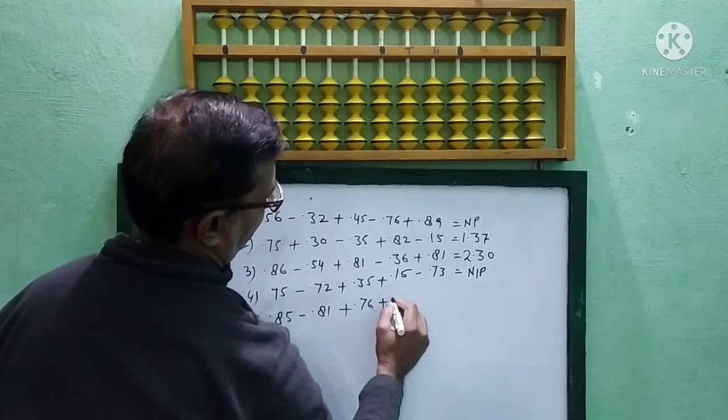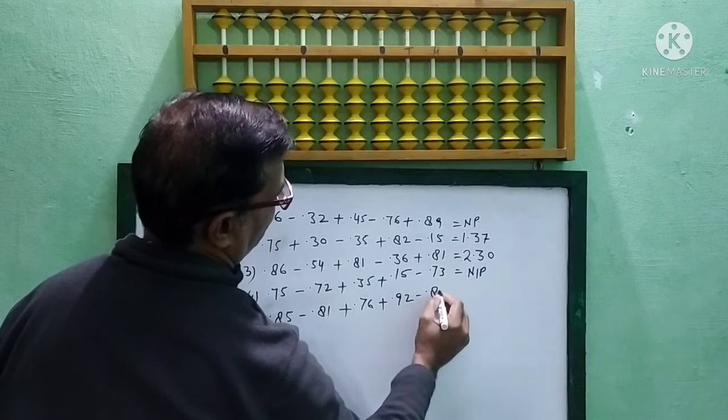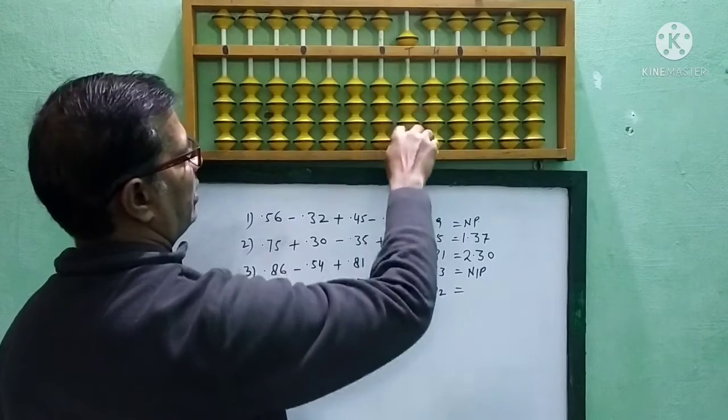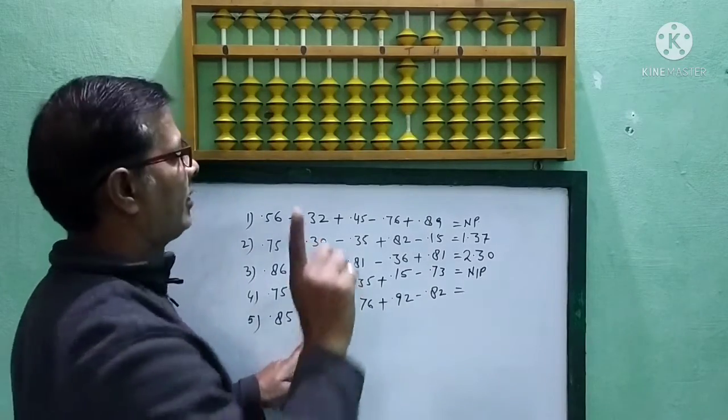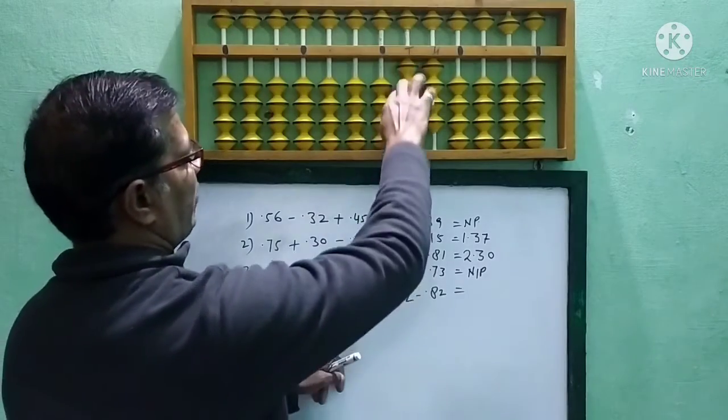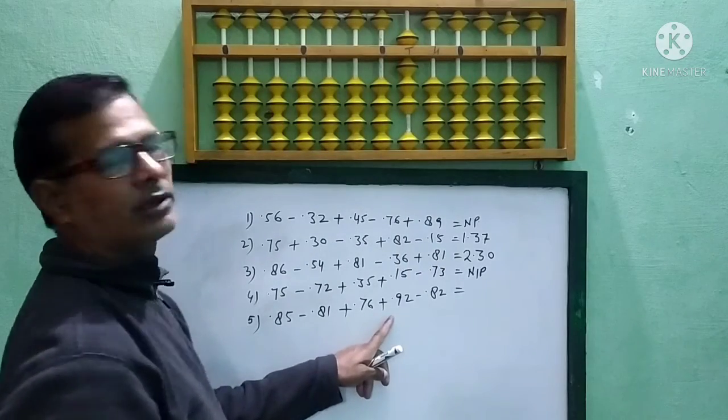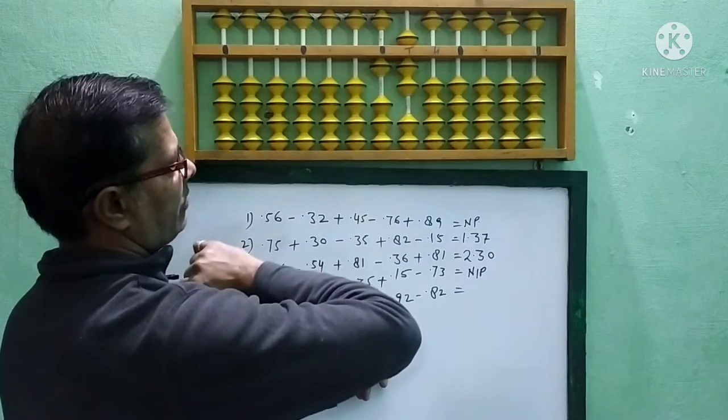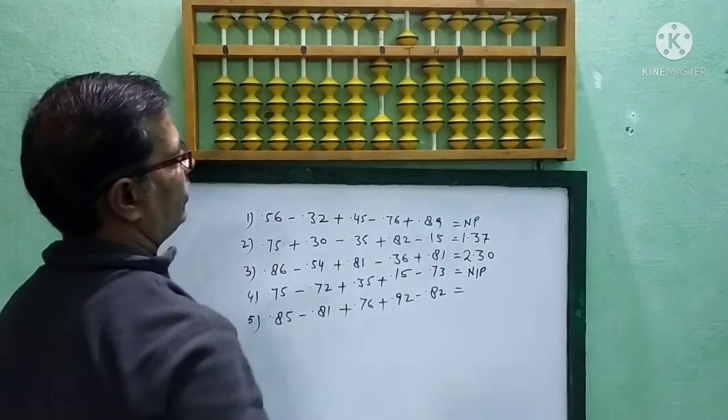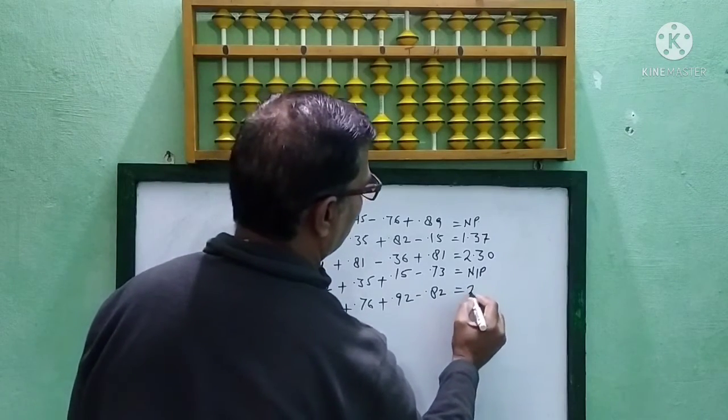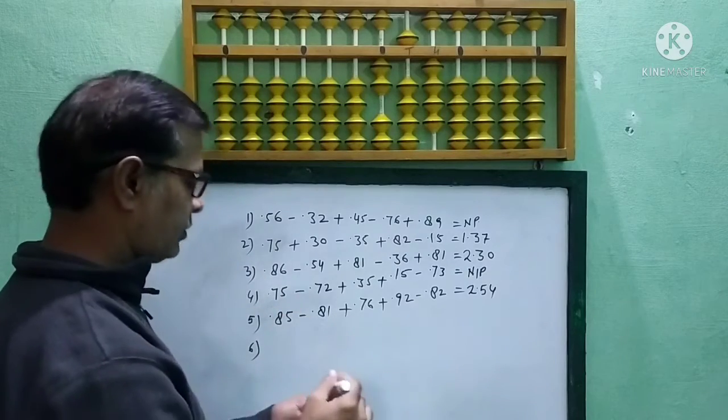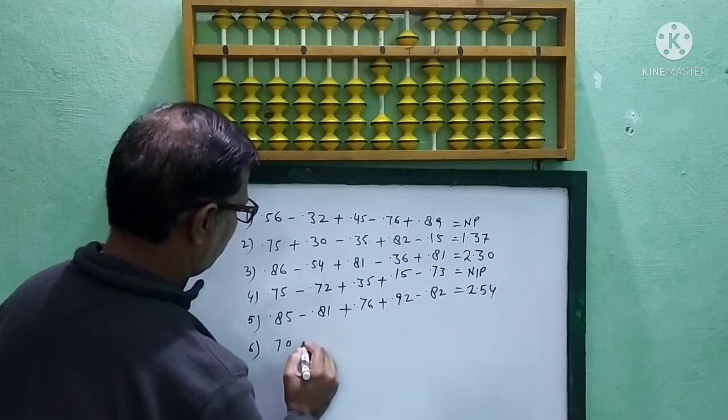One more question: 0.85 minus 0.81 plus 0.76 plus 0.92 minus 0.82. Now look at the question here. 0.85, 0.8, minus 0.81, minus 5 plus 4. Plus 0.76, 7 and then 6, plus 10 minus 4. Plus 0.92, 9 plus 10 minus 1, 9 and then 2. Minus 0.82, 8 plus 10 minus 2. Answer is 2.54.